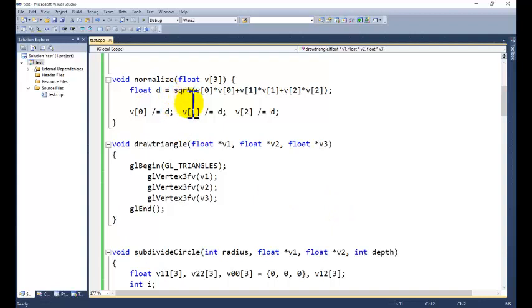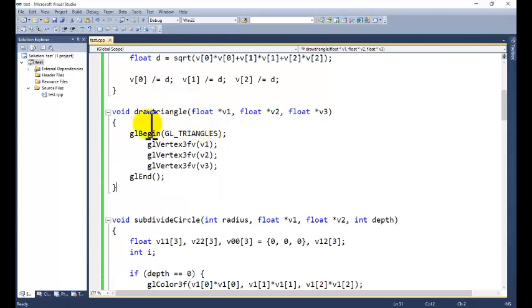Now what we are going to define the normalize function. How you can get the normalize function? Normalize function, it is actually d, the square root of V0 into V0, V1 into V2, that is A square plus B square plus C square. And this is V0 equal to V0 divided by V1 into V2. When we are going to normalize, V1 is equal to V1 divided by D and V2 is equal to V2 divided by D. This is the normalization function we are calling.